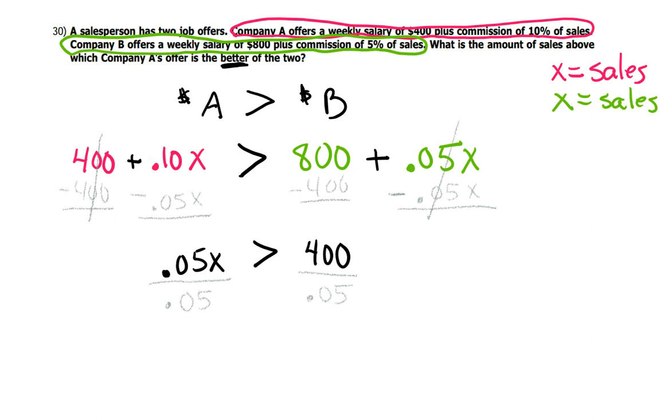And of course, anything over itself just cancels out to be one. And it's one X. Well, one X is just an X is greater than. And when I take 400 and divide it by .05, I get 8,000.